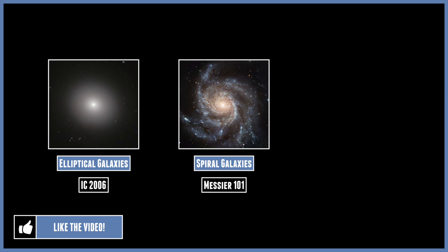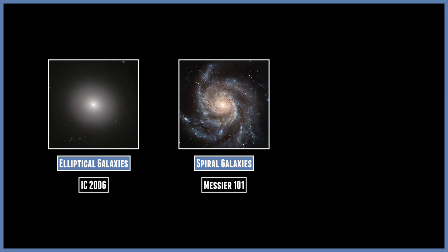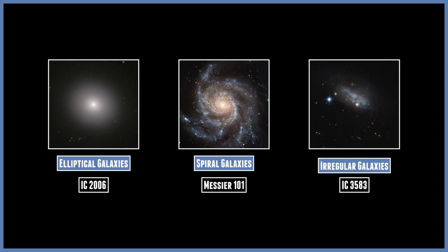The Hubble system is basically divided into three categories. We've got the elliptical galaxies, which are relatively featureless and spherical. The other one is the spiral galaxies, and these have very distinctive arms that spiral out from their centres. And finally we have the irregular galaxies, which is basically any other galaxy that doesn't seem to fit into the ellipticals or spirals.